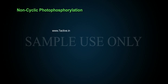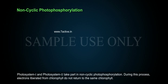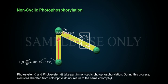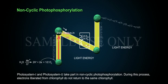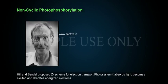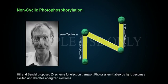Non-cyclic photophosphorylation was first reported by Arnon. Photosystem 1 and photosystem 2 take part in non-cyclic photophosphorylation. During this process, electrons liberated from chlorophyll do not return to the same chlorophyll. Hill and Bendall proposed Z-scheme for electron transport.